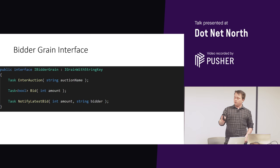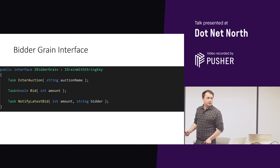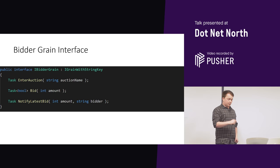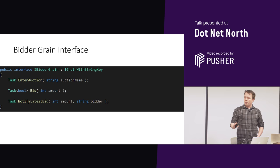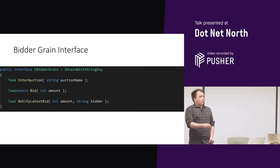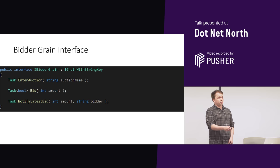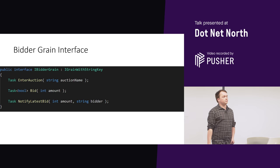For this talk I'm just going to use string keys, but if you ever use Microsoft Orleans you pick the one that's most appropriate for your application. Running down the actual methods we have in our contract: we have EnterAuction — let's just say users can enter one auction at a time and bid on that auction.